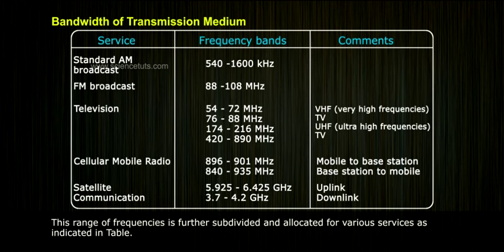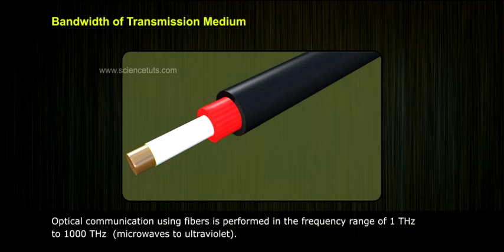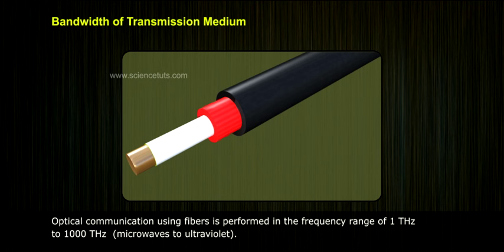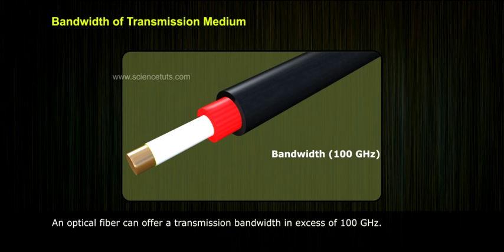This range of frequencies is further subdivided and allocated for various services, as indicated in the table. Optical communication using fibers is performed in the frequency range of 1 terahertz to 1000 terahertz, spanning from microwaves to ultraviolet.